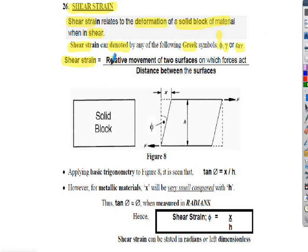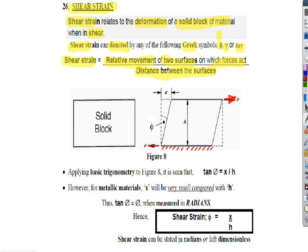Shear strain is defined as the relative movement of two surfaces on which the force acts divided by the distance between the surfaces. In the diagram, we've got a force F applied at the top of the block. The block is fixed at the base — rigidly bonded or bolted or adhered to the base. This is the reactive shearing force. The height of the block is given as symbol H and the relative movement of the block is given as symbol X.